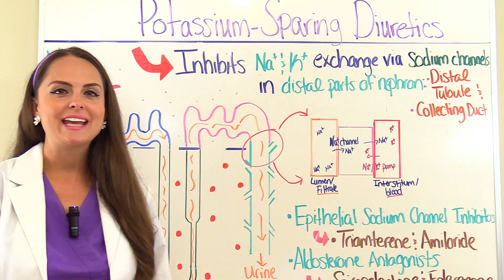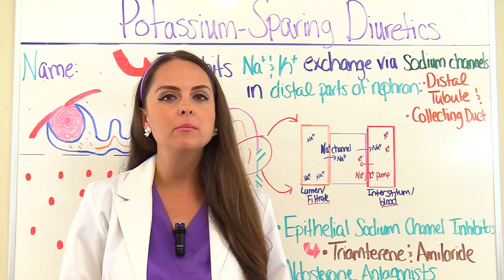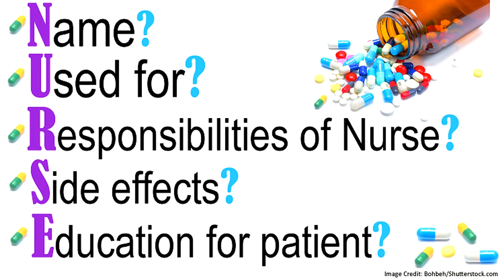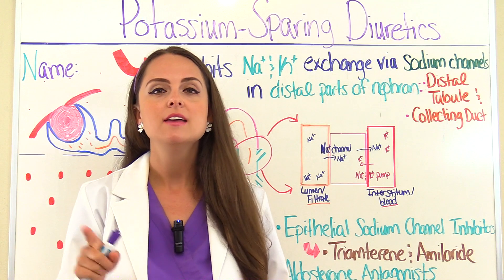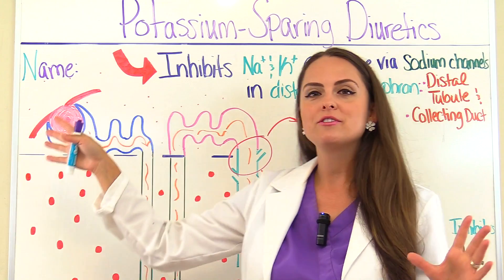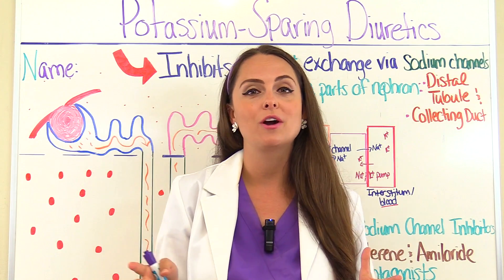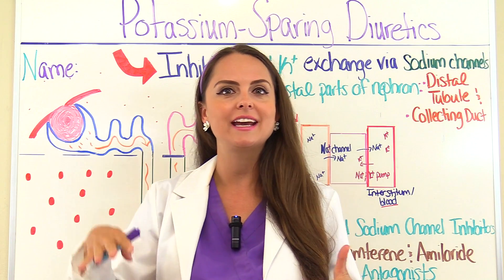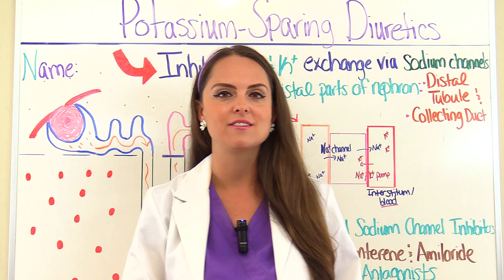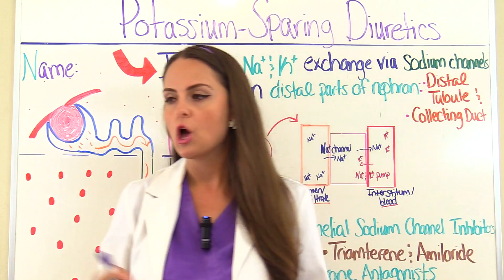As we've been going over these medications in this pharmacology series, we have been remembering the word NURSE because this allows us to remember those important concepts we need to know for exams about these medications. So first we're going to start with the name. The name of the drug tells us how the medication works, which lays the framework for understanding everything else. So we're dealing with potassium sparing diuretics.